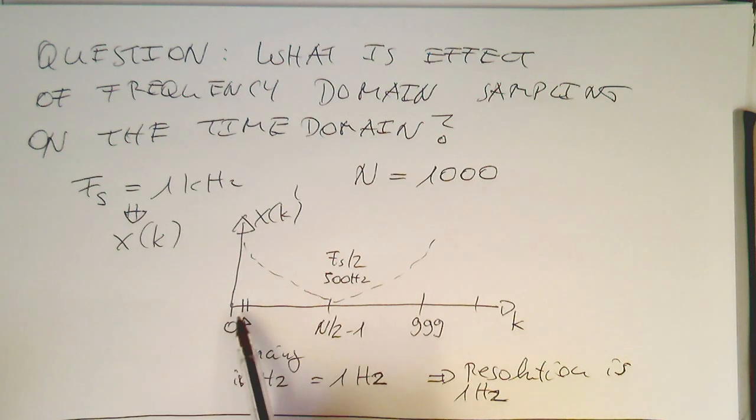So if we have a frequency, for example, of 0.5 hertz, then this cannot be represented, because there's no k for this.